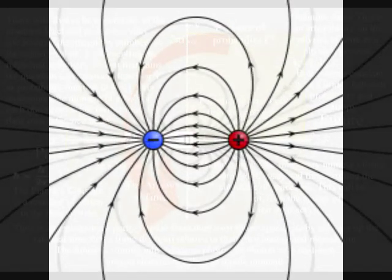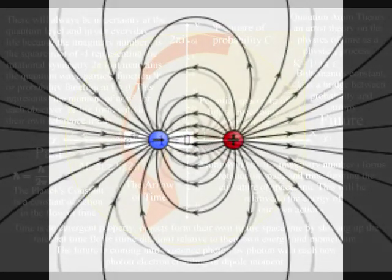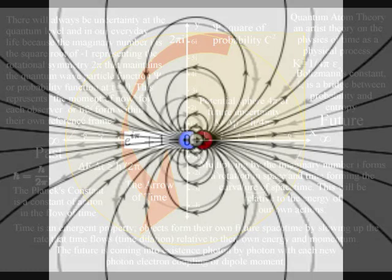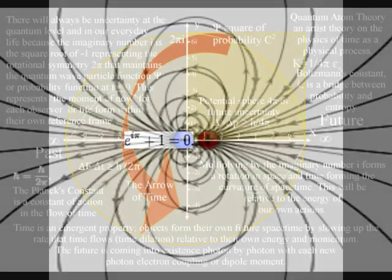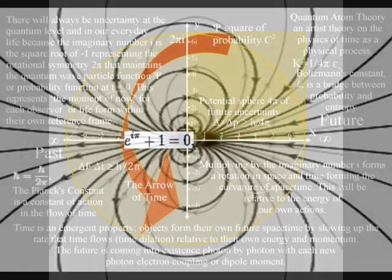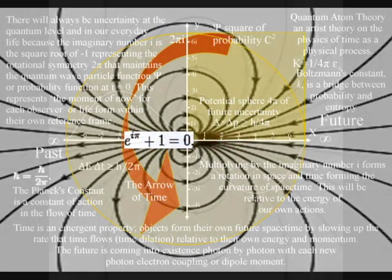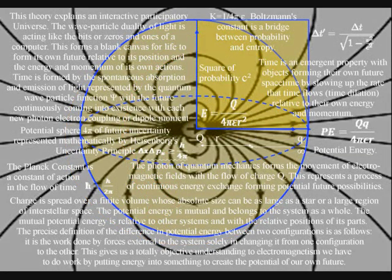No one knows why we have positive and negative charge. But the great puzzle can easily be explained in this theory. The movement of positive and negative charge represents different aspects of the same process. We see and feel this process as time, with the future unfolding photon by photon, with the movement of charge.